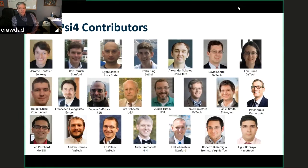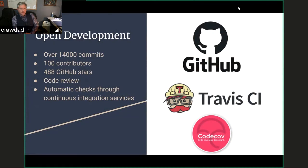Here are some of the PSI4 core contributors. We are really grateful to all these folks who have been working on this over the years — they've written substantial components of the code and made PSI4 what it is today. It's truly open source with a fully open development effort. The package on GitHub now has over 14,000 commits, 100 contributors, lots of GitHub stars. We follow a proper software engineering process with a pull request system with code review and automatic checks and testing through continuous integration services.